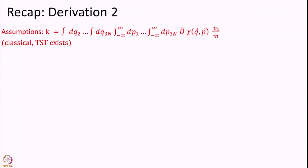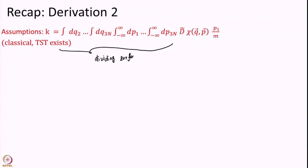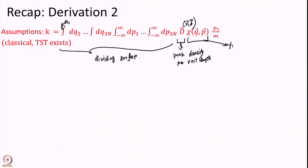Another way of deriving the same equation with the same set of assumptions is to integrate over all phase space, not only along the speed. We again start with a classical assumption so we can write positions and momenta, and we assume a transition state or dividing surface exists. We integrate over all coordinates along the dividing surface — all coordinates and momenta. One coordinate does not appear, dq_1, because we are integrating along the dividing surface and not along the reaction coordinate. Here d is the probability density per unit length, and chi in general is the transmission coefficient.